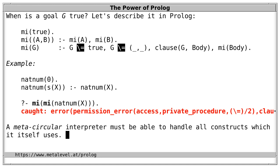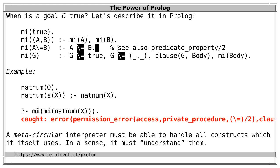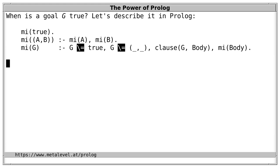A meta-circular meta-interpreter must be able to handle all constructs it uses — in a sense, it must understand them. For instance, we must teach the interpreter that the goal 'A \= B' is true if 'A \= B' succeeds. We can generalize this to all built-in predicates, for example, by using the reflection predicate 'predicate_property' to check whether something is a built-in predicate and, if so, invoke it directly instead of trying to obtain its body with 'clause'.